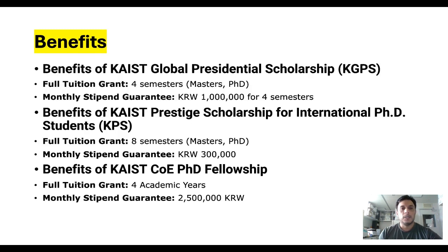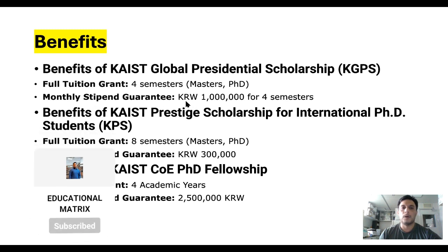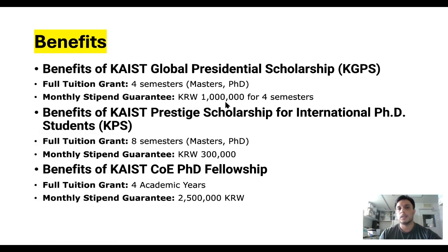There are other scholarships students can also apply for. The KAIST Global Presidential Scholarship covers four years for master and PhD and provides a stipend of around one thousand. The KAIST Prestige Scholarship for international PhD students provides 300,000 KRW, and the KAIST CCOE PhD Fellowship provides 225,000 KRW — KRW being South Korean currency.